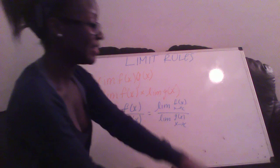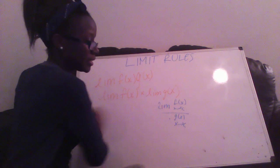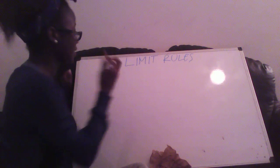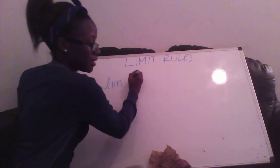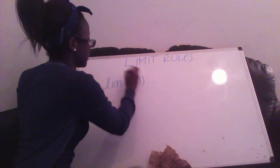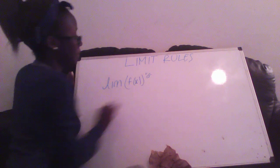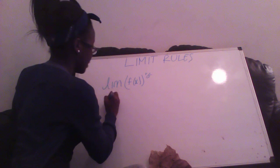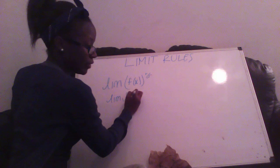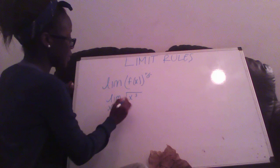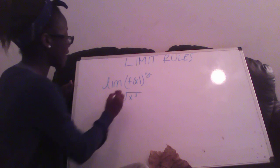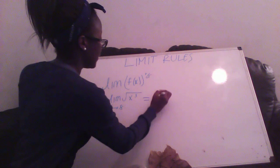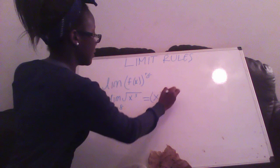For our last and final rule, it's the exponent rule. You have the limit of f(x) to your exponent. An example is when you have the limit of the square root of x to the third. The square root equals 1/2 as an exponent — if you had a cube root, it would equal 1/3. So the square root equals 1/2, giving you x to the third times 1/2.